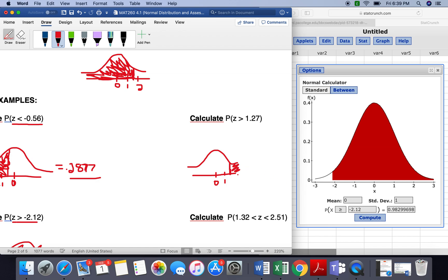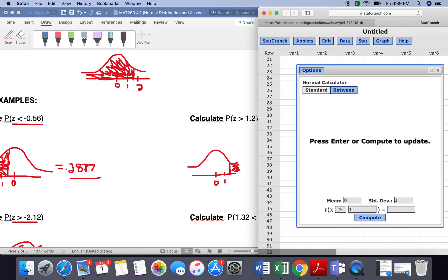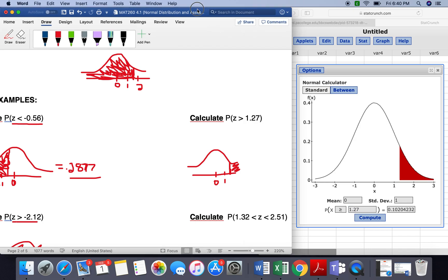So you can see this is a much smaller portion shaded in than the last one. So we'll change this to 1.27, and we get 0.1020.